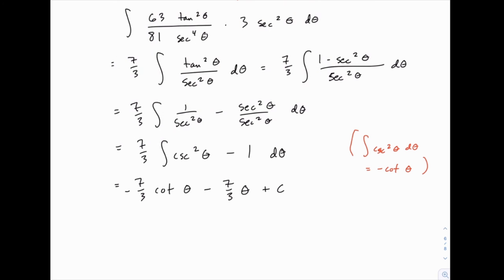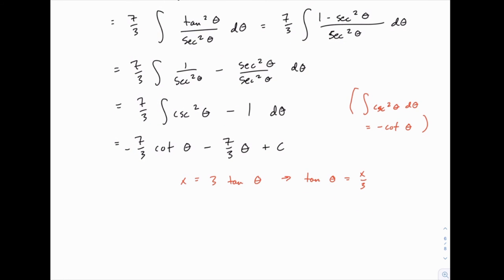And then all we have to do is replace cotangent of theta and theta with something in terms of x. So for both of them, we'll start with what we know that x equals 3 tangent of theta, which means tangent of theta equals x over 3. Now from that, we can figure out both pieces that we need. First of all, cotangent theta, remember that cotangent is just 1 over the tangent. It's the reciprocal of the tangent function. So if tangent is x over 3, cotangent would be the reciprocal 3 over x.